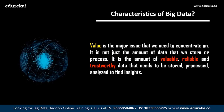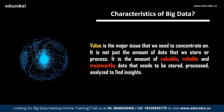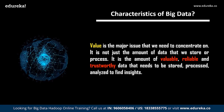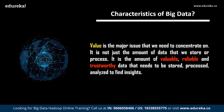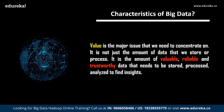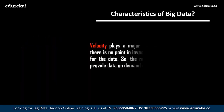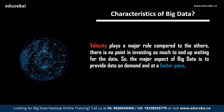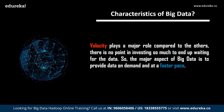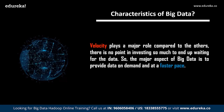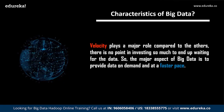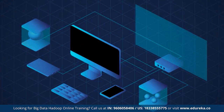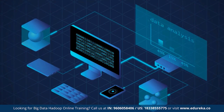Following veracity, we have value. Value is the major issue we need to concentrate on — it is not just the amount of data we store or process, but the amount of valuable, reliable, and trustworthy data that needs to be stored, processed, and analyzed to find insights. Finally, the last but not the least: velocity. Velocity plays a major role compared to others. There is no point in investing so much only to end up waiting for data. The major aspect of big data is to provide data on demand at a faster pace.